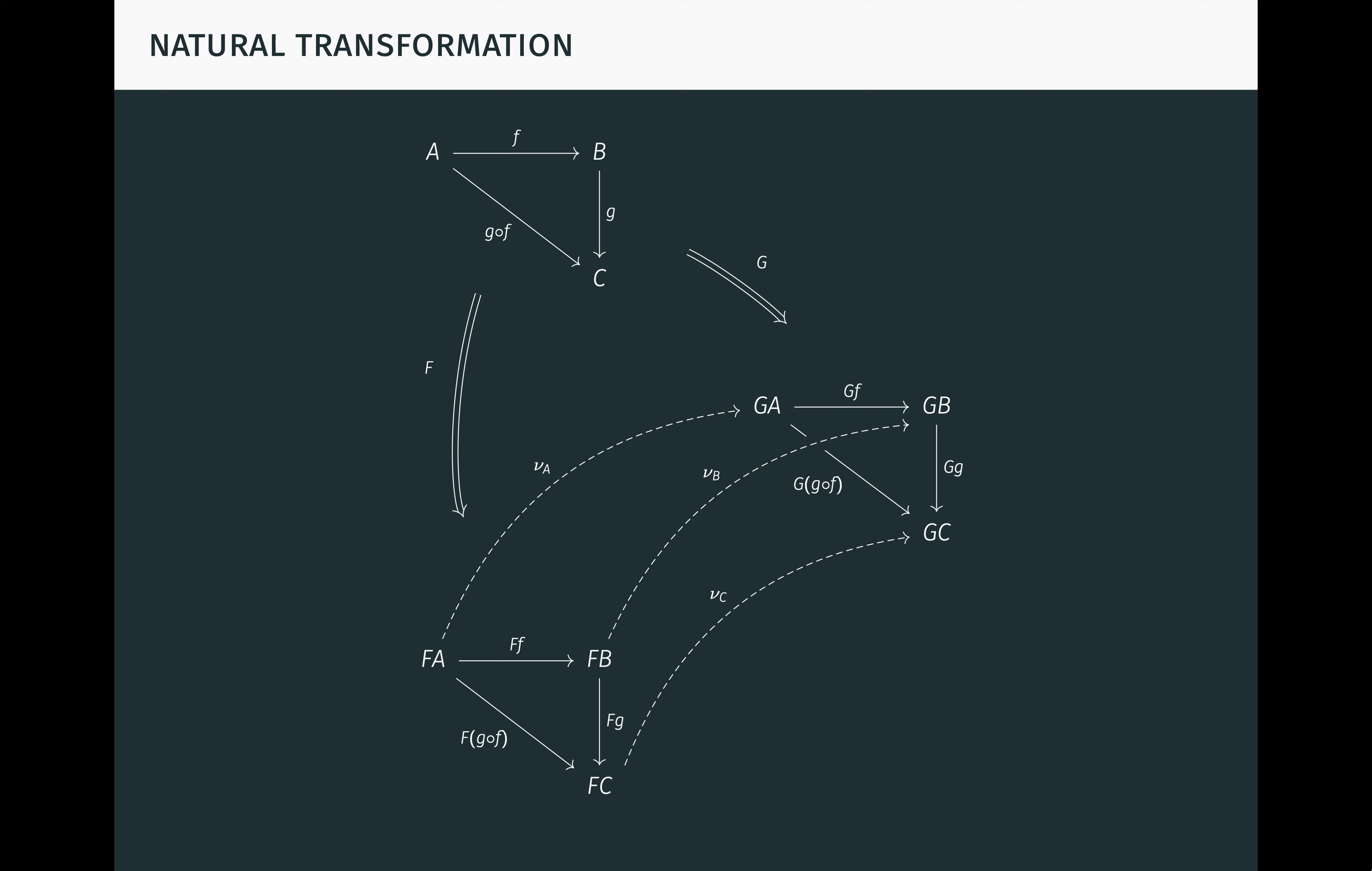In general, the functors F and G create diagrams of shape C in D, and the natural transformation nu relates those two diagrams in D.